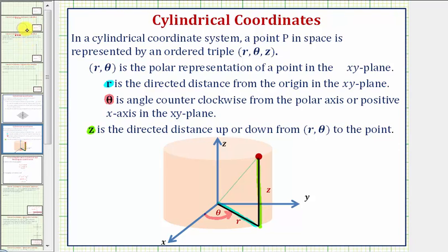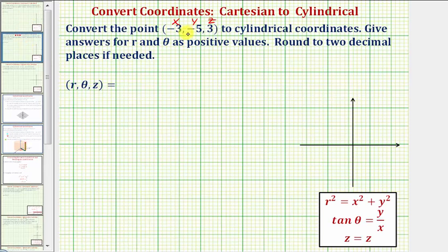Going back to our example, let's first plot the point negative three comma negative five in the xy plane to help visualize r and theta. This is the x-axis, this is the y-axis. Since the x coordinate is negative three, we'd go left three units. And because the y coordinate is negative five, we'd go down five units. So this would be the point negative three comma negative five in the xy plane.